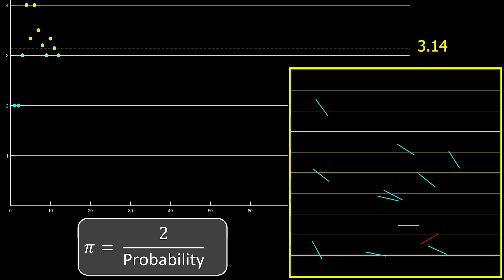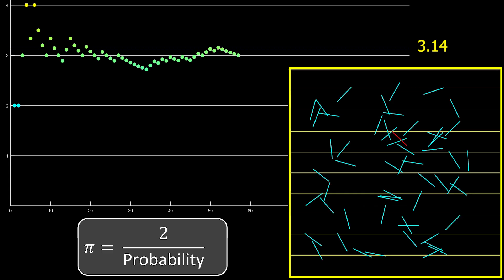Okay, that's not amazing, but I only used 60 toothpicks. I can program on the computer toothpicks to randomly land. You can see that the more toothpicks I drop, the closer this probabilistic formula gets to pi.